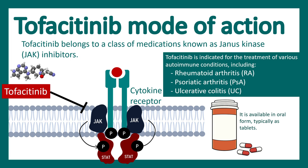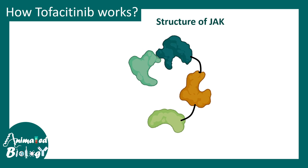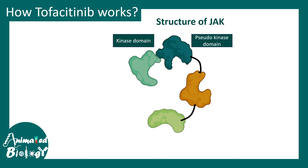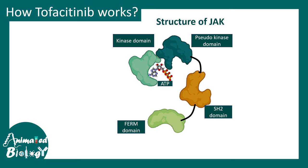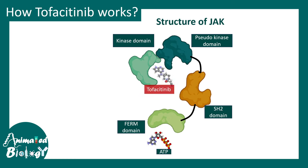From a technical and structural point of view, this molecule blocks the Janus kinase, or JAK. JAK has several domains: the kinase domain which regulates phosphorylation, the pseudokinase domain, SH2, and FERM domain. In order for JAK to phosphorylate any target protein, it needs ATP — without ATP, any kinase protein cannot perform phosphorylation.